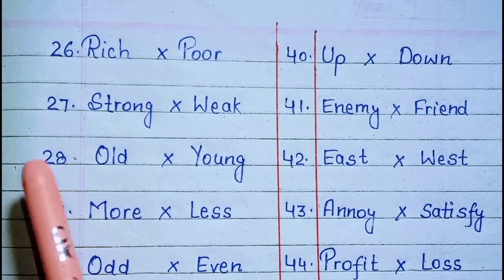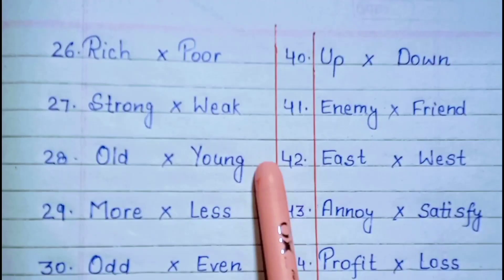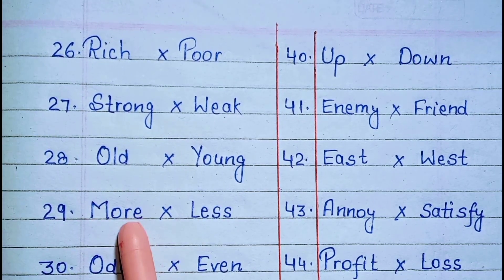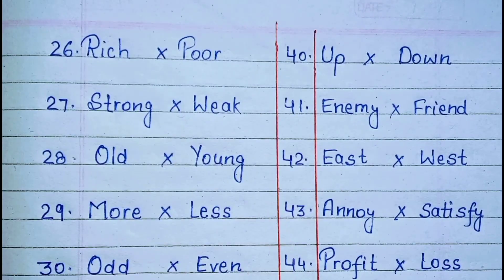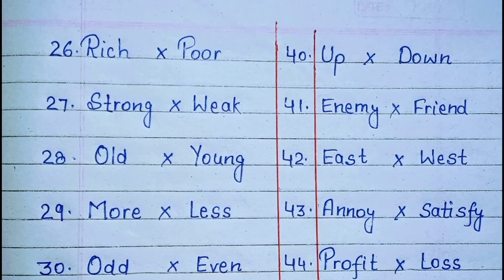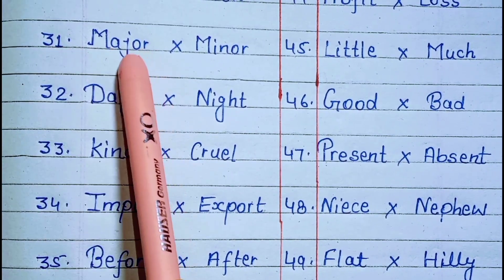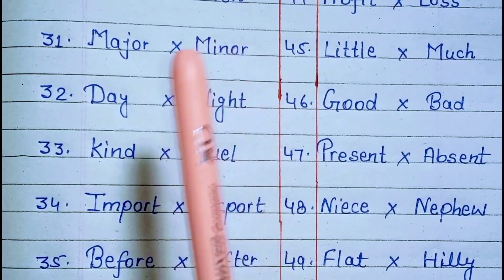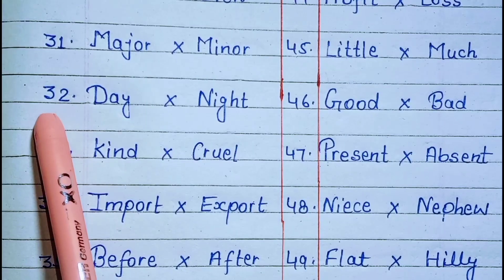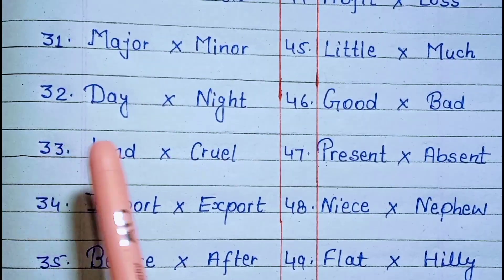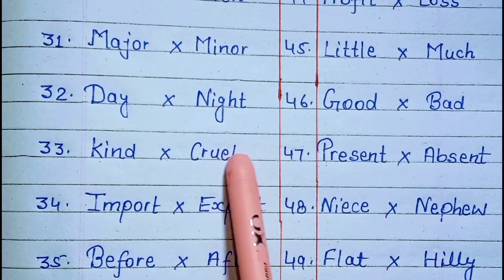28. Old, young. 29. More, less. 30. Odd, even. 31. Major, minor. 32. Day, night. 33. Kind, cruel.